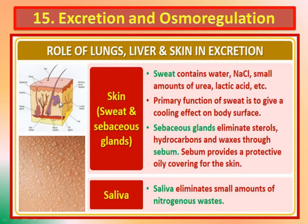In many organisms, skin is thin and permeable, which helps in diffusion of waste products like ammonia. The human skin, however, is thick and impermeable, and it shows the presence of two types of glands.